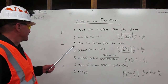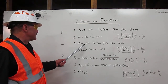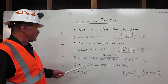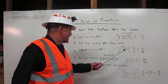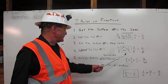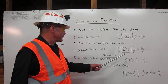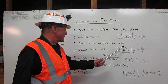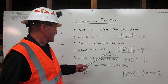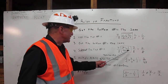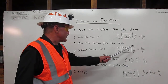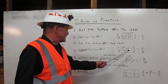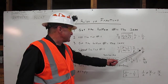To subtract fractions, two rules. First, get the bottom numbers the same. Second, subtract the top numbers. In our example, we're going to subtract one-fourth from one-half. The bottom numbers are not the same, so we're going to multiply four times two to get eight, and four times one to get four. Going the other way, we're going to multiply two times four to get eight, and two times one to get two. So we're going to subtract two-eighths from four-eighths, which gives us two-eighths.